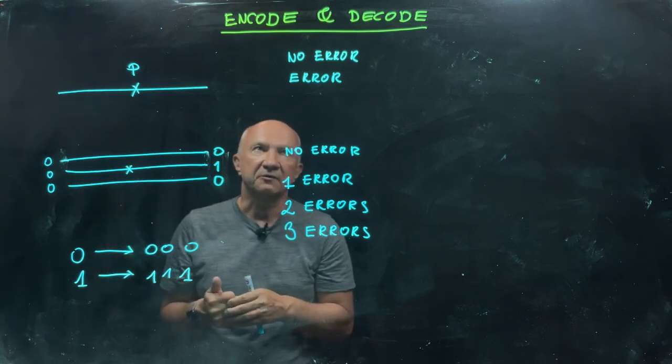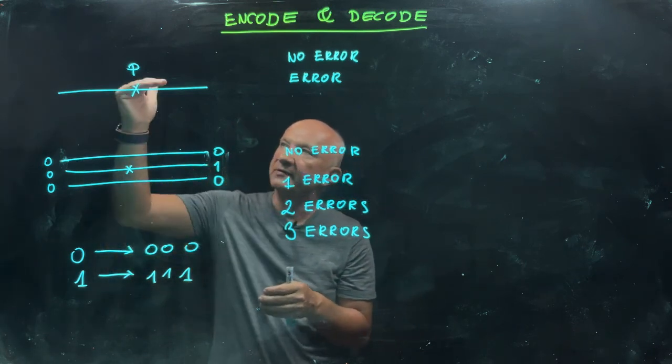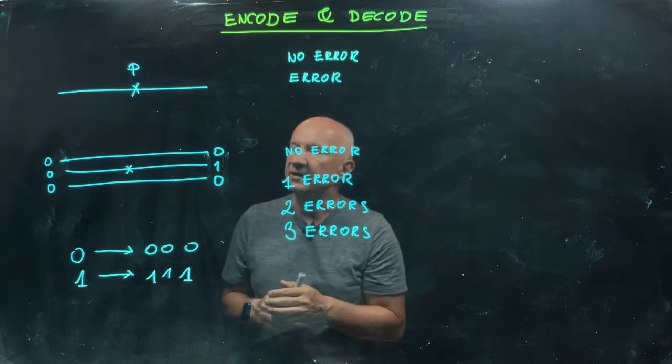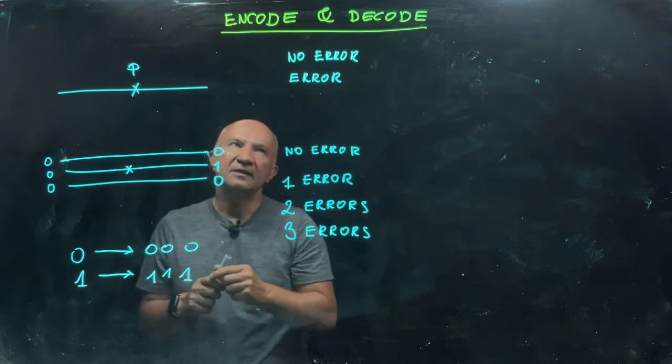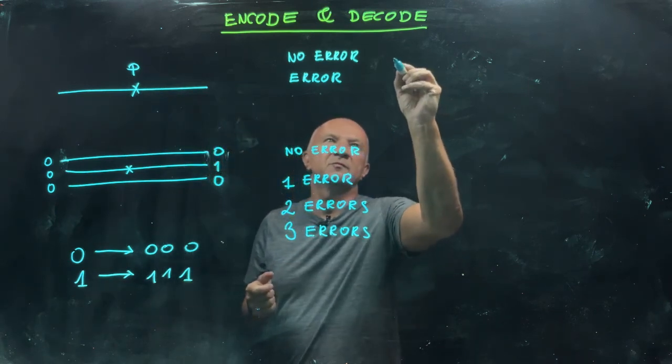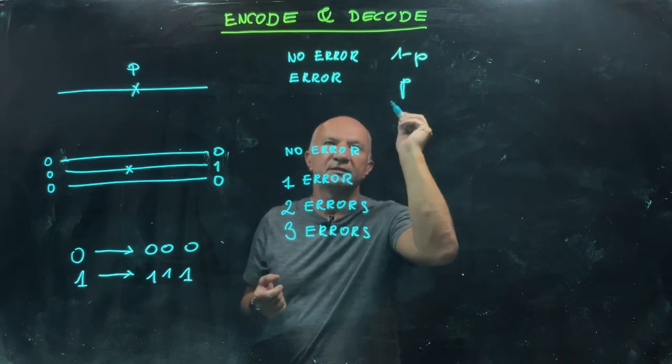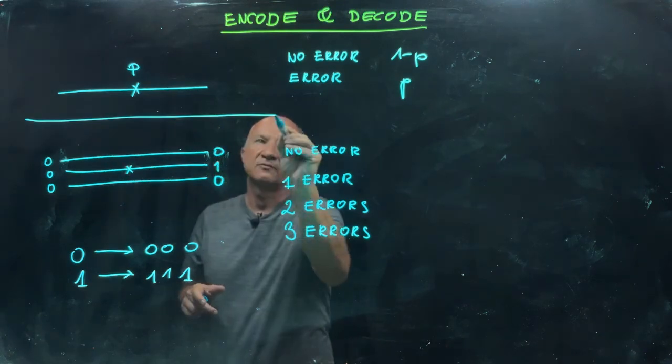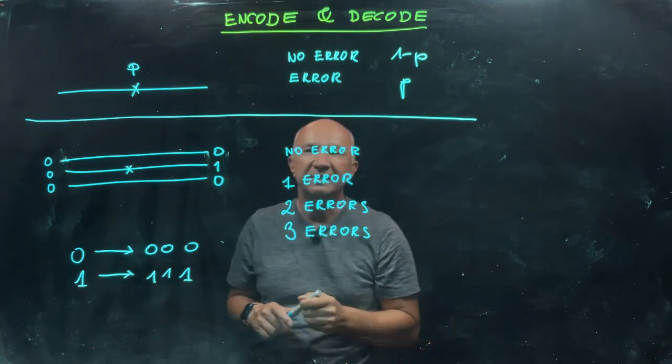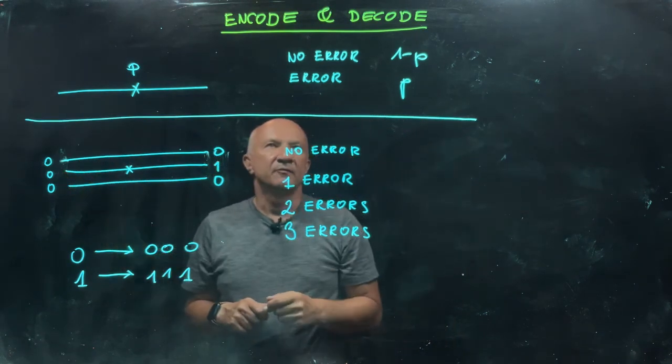Let's compare the probability of error after decoding with the repetition code and compare it with the case where we don't do any encoding. When we don't do any encoding, no error happens with probability 1-p, and error happens with probability p.